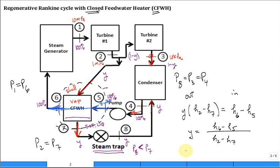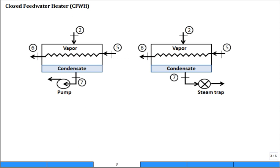You don't need to memorize that equation — just be able to re-derive it when needed. The steam trap is highly irreversible and there will be a lot of exergy destruction in it. There's another alternative: instead of the condensate going through a steam trap, which is highly irreversible, you put it into a pump to boost the pressure up.